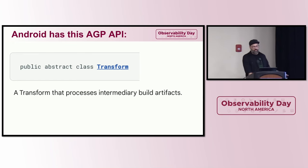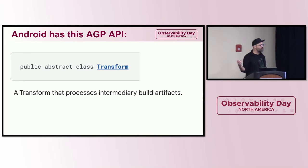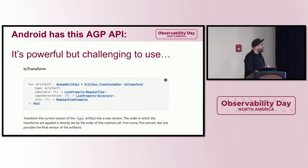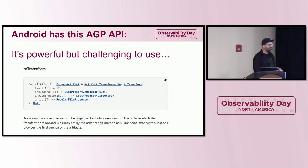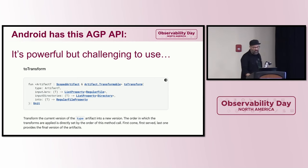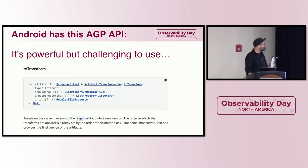Fortunately, AGP provides an API that gives you a way to process intermediary build artifacts. Late in that stage, as build artifacts are being generated, you can hook into this Transform API. They provide that — it's really handy, how very nice of them. But it's very complicated, much like the transform classes in the Java compiler. This is also very complicated to hook into.